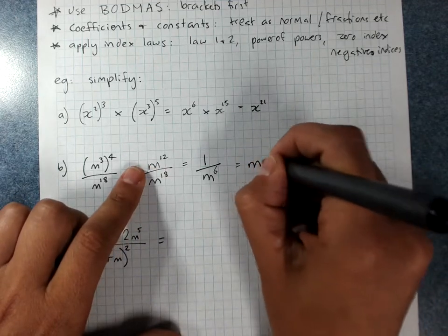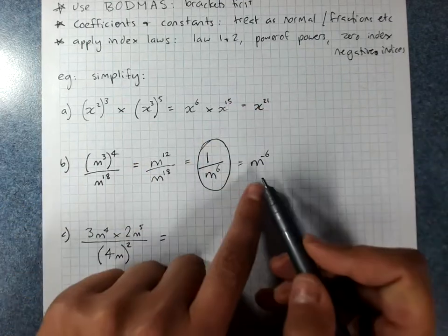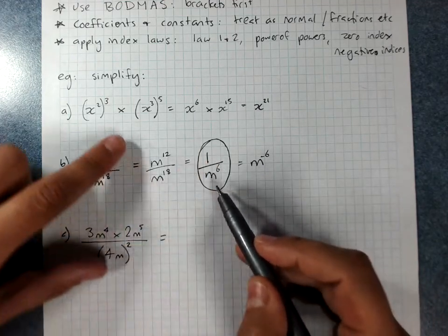you would get m to the power of negative 6. But we're better off using our negative power rules and writing 1 over m to the 6.